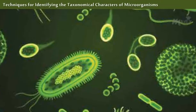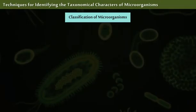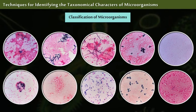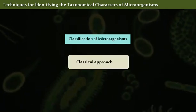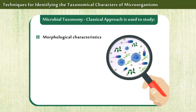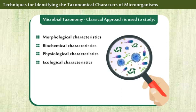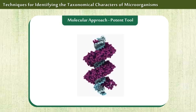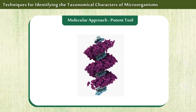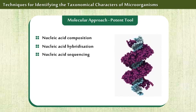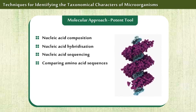In order to identify various microorganisms, we need to classify and define them. The two ways to determine the taxonomical characters are the classical approach and the molecular approach. The classical approach is used to study morphological, biochemical, physiological, ecological, and genetic characteristics in microbial taxonomy. The molecular approach is the most potent tool to study taxonomy, done by analyzing nucleic acid composition, nucleic acid hybridization, nucleic acid sequencing, and comparing amino acid sequences.